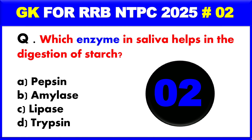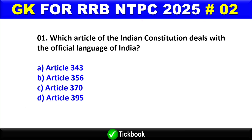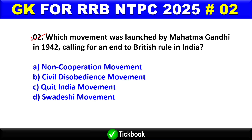Question number 1: Which article of the Indian Constitution deals with the official language of India? Option A is the right answer — Article 343.